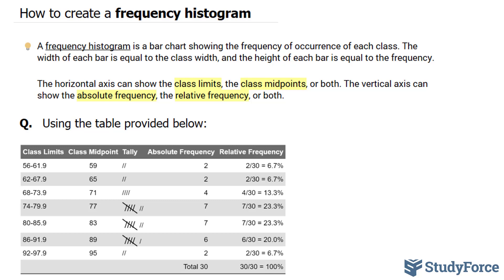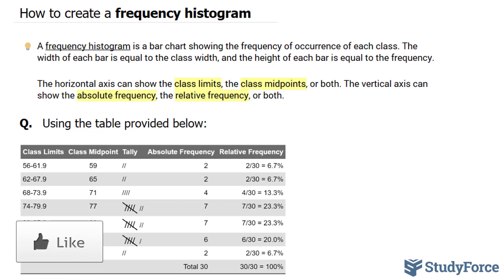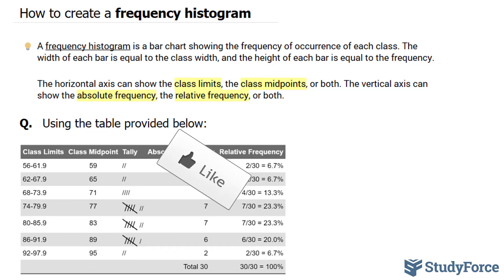In our example, I'll show both. The vertical axis can show the absolute frequency, the relative frequency, or both — and in our case, we'll show both.